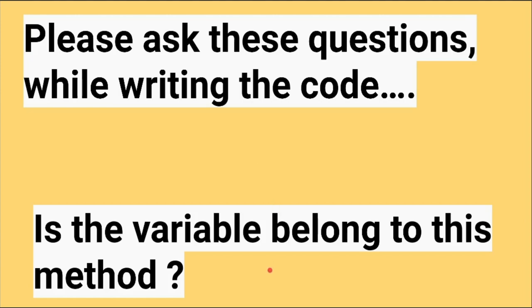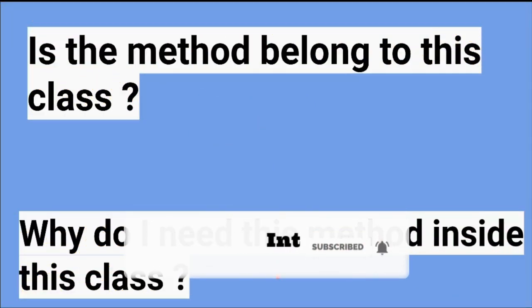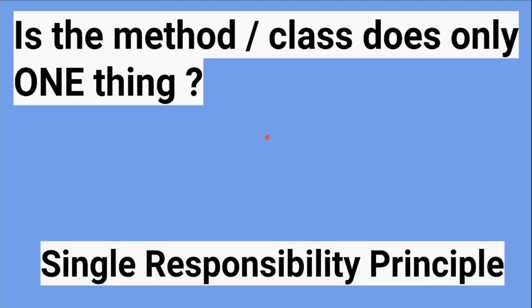The next clean code tip: please ask — does this variable belong to this method? Whether the variable, method, and class are connected well and their relationships are correct. Do we really need this variable inside this method or class? Is this method belonging to this class? Why do we need this method inside this class? Why do we need so many methods inside the class? Is this business logic already covered in another class? Such questions help us avoid code duplication, and a class should do the right thing.